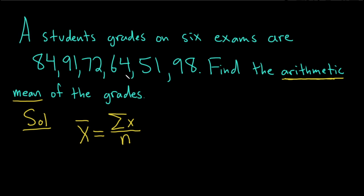So we have 1, 2, 3, 4, 5, 6 things. So in this problem, n is going to be 6. So that number goes on the bottom.